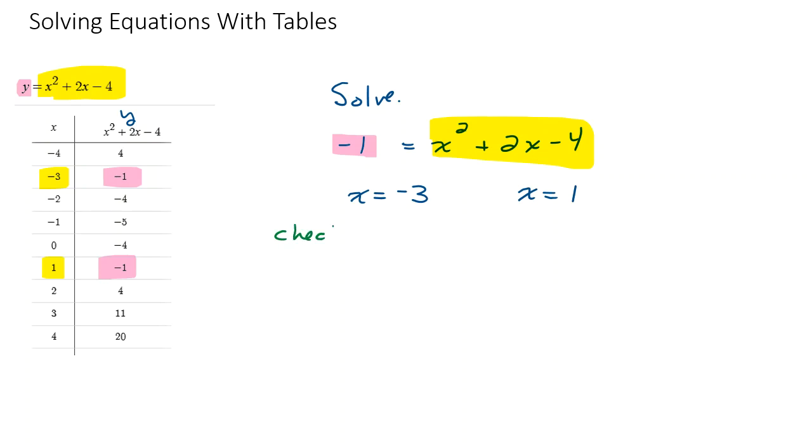Let's check both of those. This will be good practice. So maybe I'll check this one, and you can check the other one. So if I let x be negative three, I'm going to plug that in for my x's. So I'm going to do negative three squared, two times negative three, plus two times negative three, minus four.